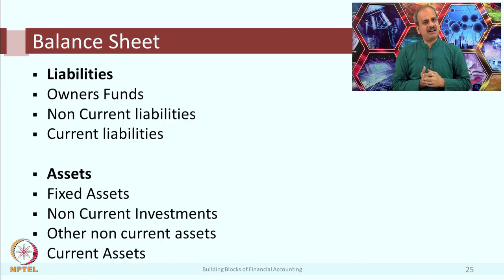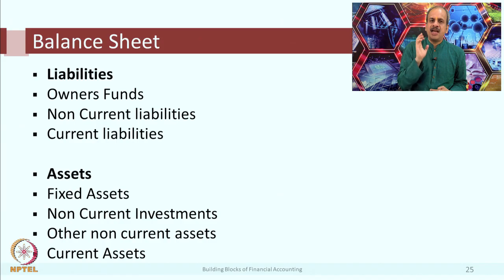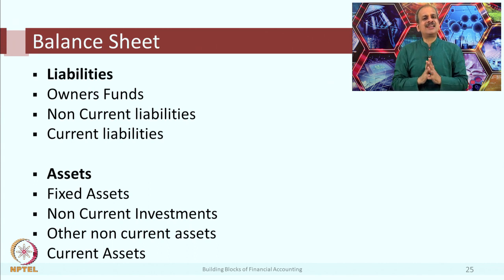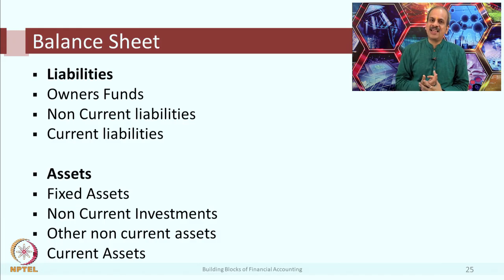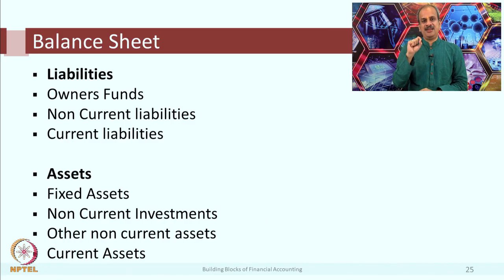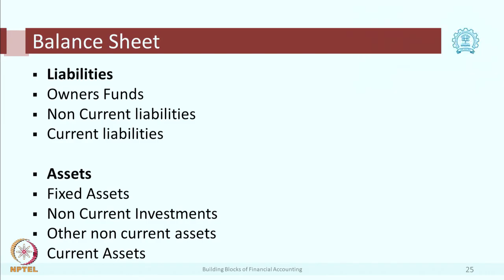The third item is current liability. Current liabilities, from the money cycle, arise when that liability is intended to be paid within one year's time. For example, if you have employees and do not pay their salary at the end of the month, the unpaid salary amount will be called a current liability. Similarly, office expenses not yet paid are also a current liability. All liabilities which are due and payable within one year are current liabilities.